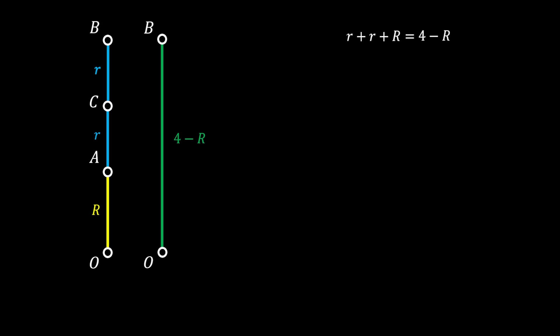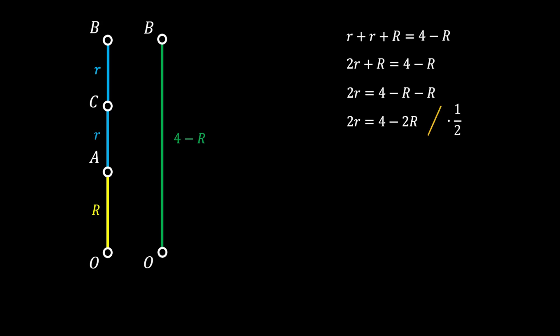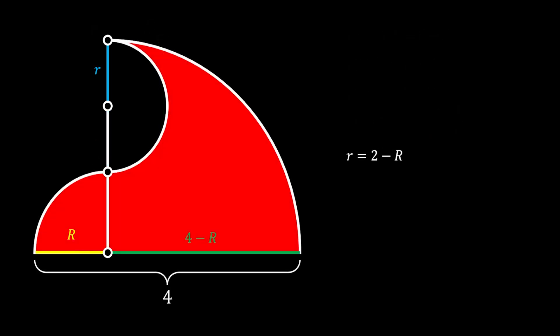Now we can simplify this equation. We will put big R on the right side and get 2r = 4 minus 2R. Of course we can divide everything by 2 and we will get that the radius of our small quarter circle must be equal to 2 minus R.